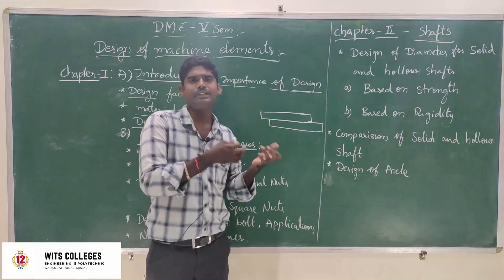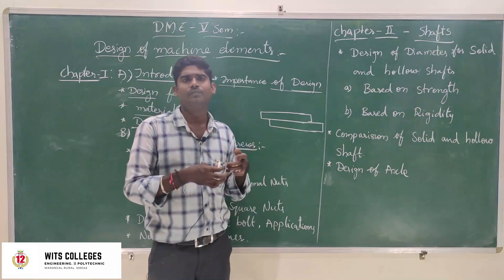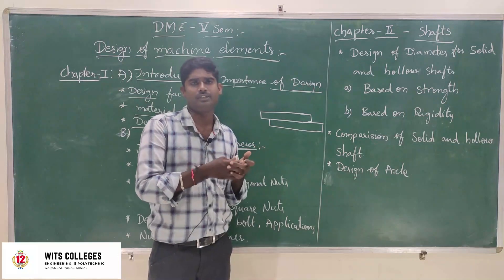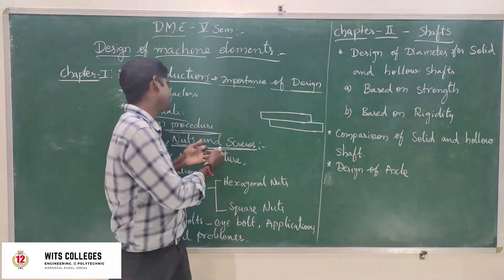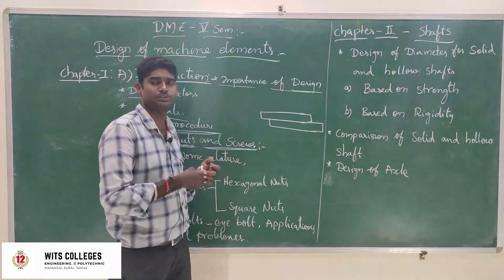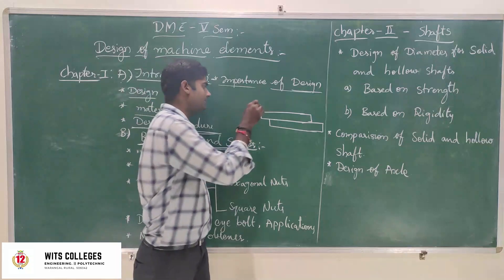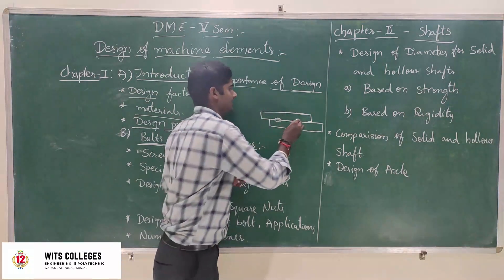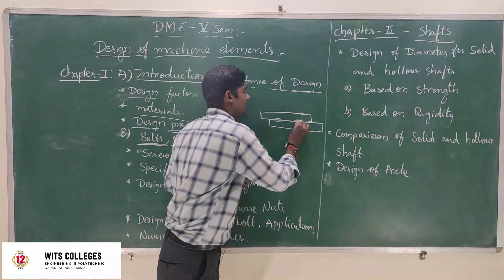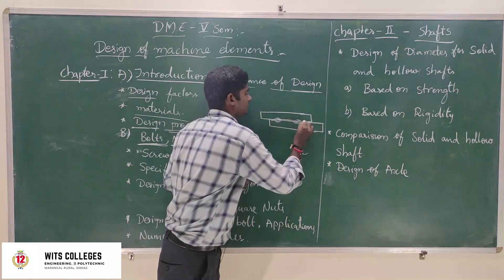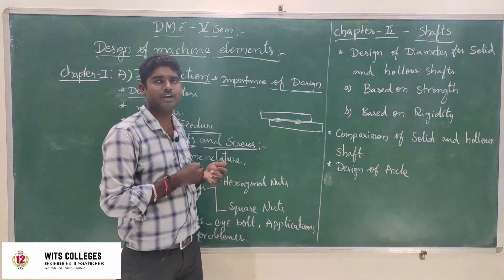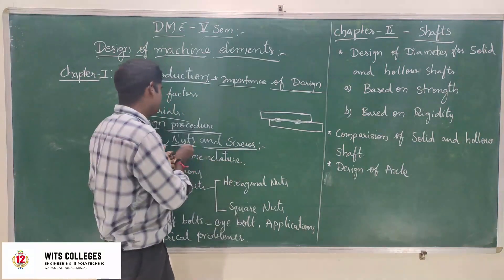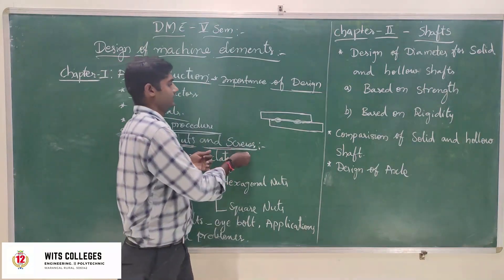In permanent joints, we use welding. Welding is one of the permanent joints. For temporary joints, we use bolts, nuts, and screws. If you want a permanent joint, go for welding. If you want a temporary joint, go for bolts, nuts, and screws.